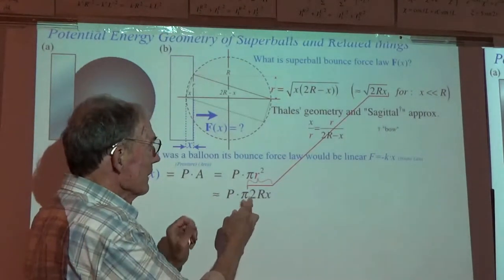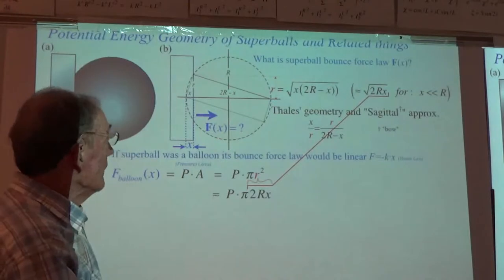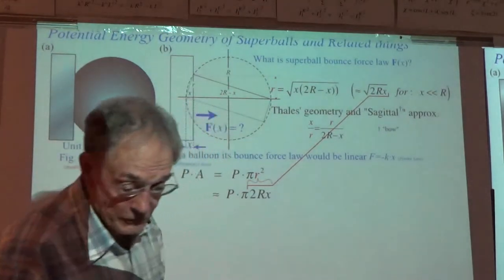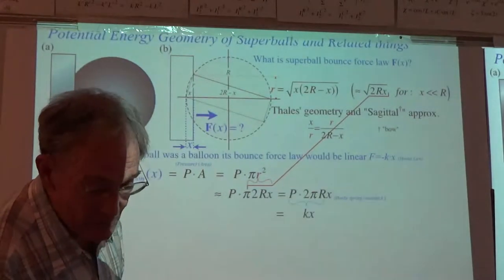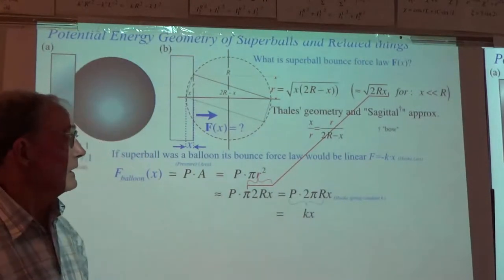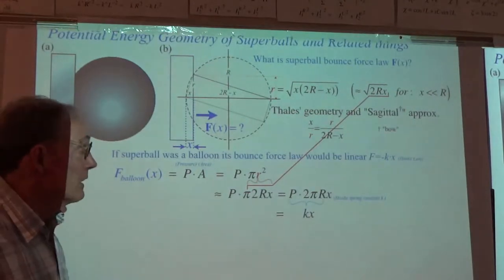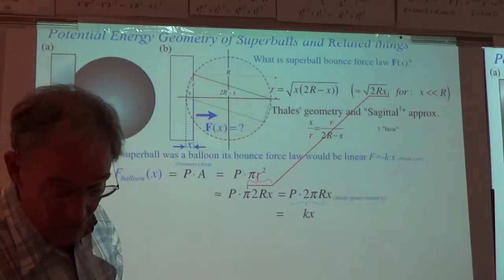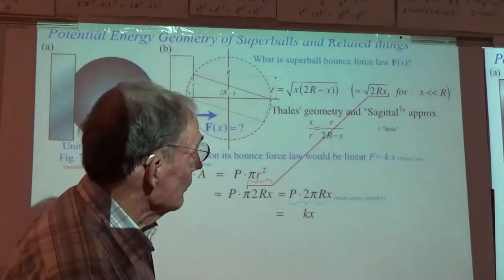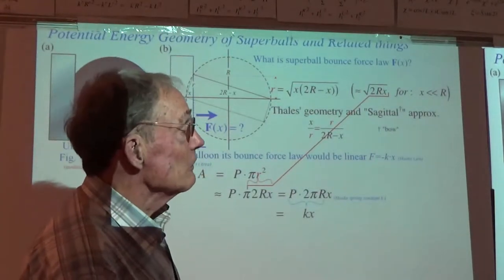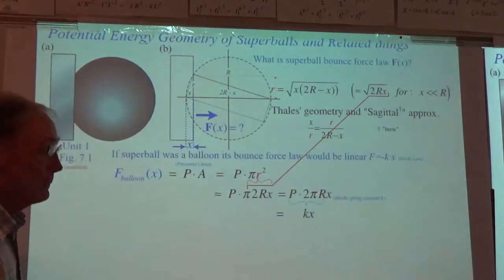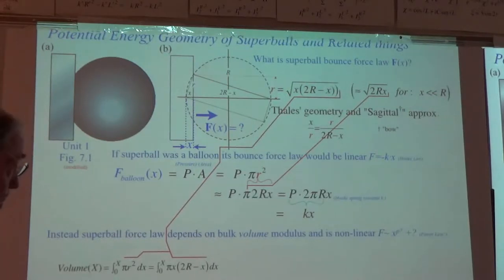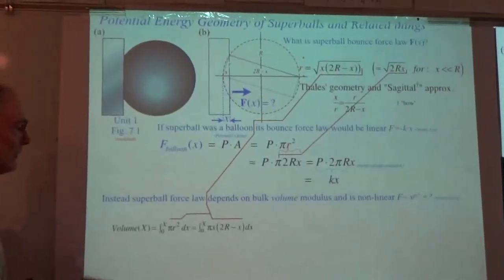So we have F = (pressure × 2πR) × x — that's a spring constant. You've solved that problem. That's a good start in bouncing balls where the ball is completely hollow and filled with air, like a balloon. Super Ball is much more complicated. The Super Ball depends on the bulk volume modulus. That would be true of any rubber ball, but this material is more like silly putty — that pinkish-yellow stuff you can buy for kids to play with.